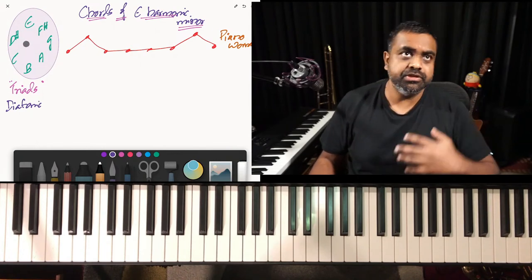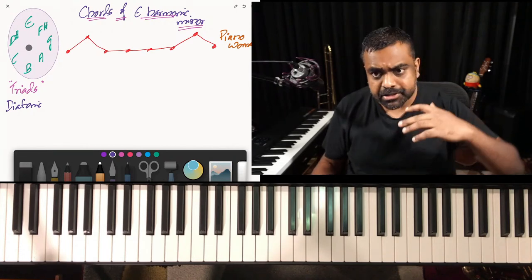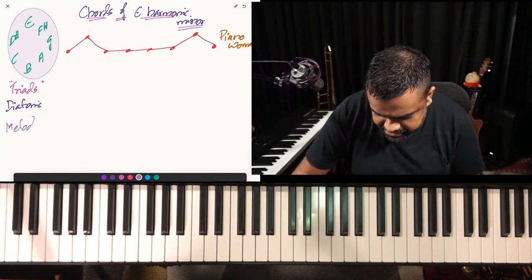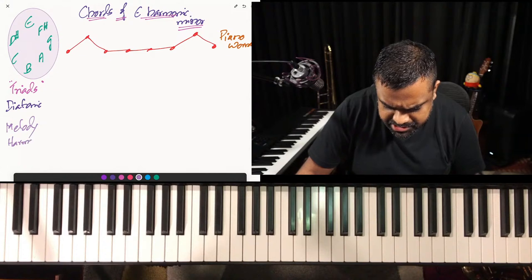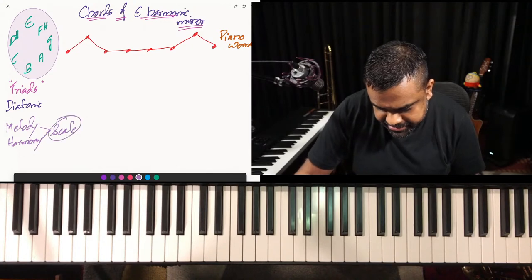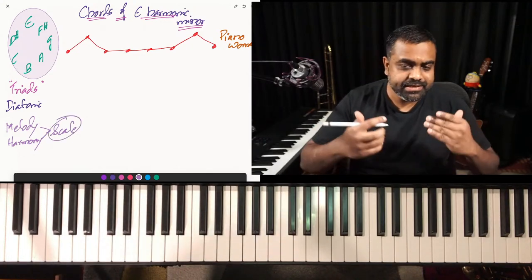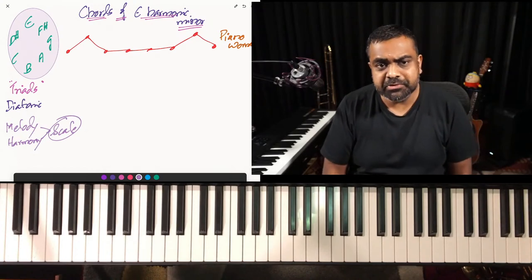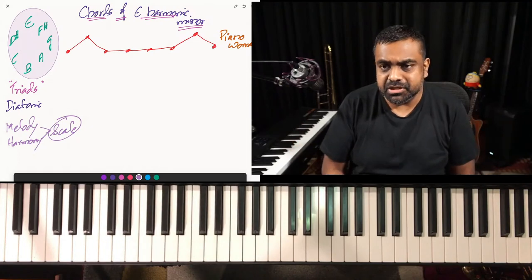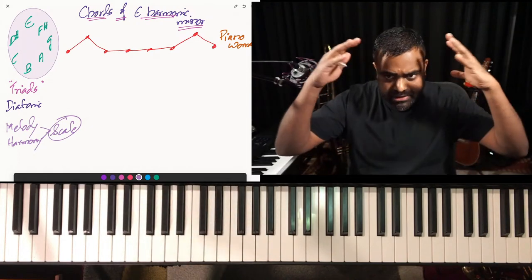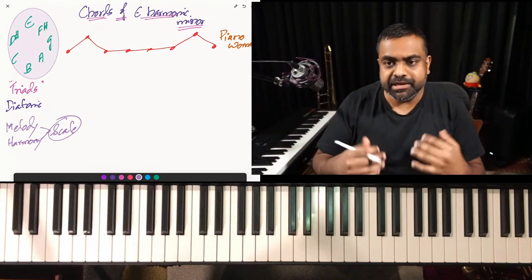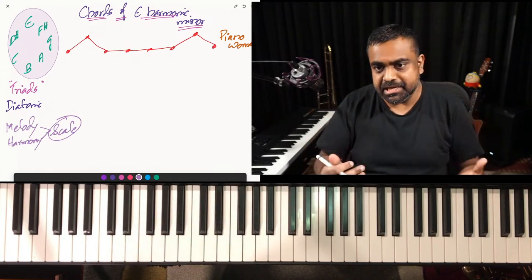All the chords or triads will come from this particular scale. When you're composing a song in E harmonic minor — or any other scale — both the melody and the harmony will be derived from the same scale. That seems like common sense because why would the melody be on one scale and the harmony on another? We're hearing all elements of music together.